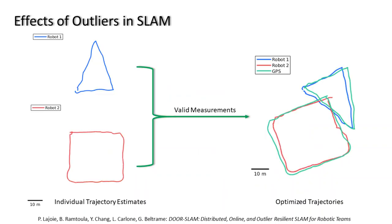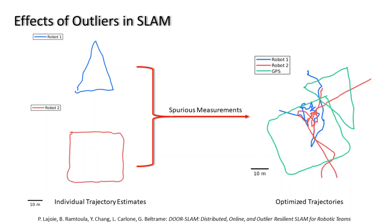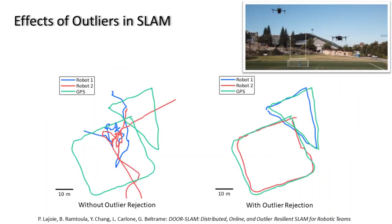Multi-robot SLAM is challenging and prone to failures due to incorrect data association and perceptual aliasing. Those phenomena add spurious measurements among the inter-robot loop closures and can lead to the failure of a SLAM estimator. In our field experiments, we encountered such spurious measurements and, as you can see on the figure on the left, it produces a dramatic distortion of the estimated trajectories. However, using DoorSlam's distributed outlier rejection mechanism, we are able to recover the correct trajectory estimates as shown on the right.